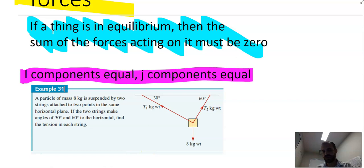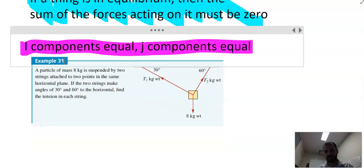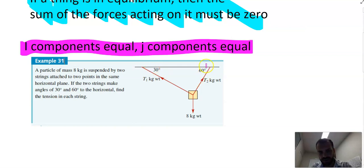i components equal, j components equal. That's the important thing to note with these questions. So let's dive into it. It's a very familiar question. It's a particle of mass eight kilograms suspended from two ropes. You can see they've given us some angles here, 30 degrees and 60 degrees there.